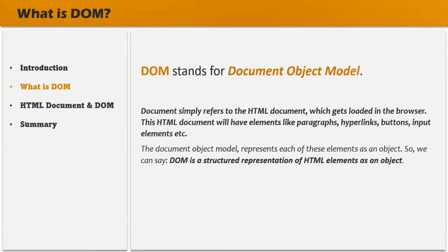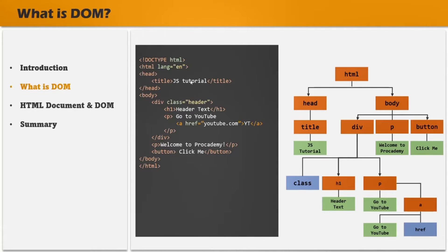Let's understand this with an example. Here I have a very simple HTML. In this HTML, we have a head tag, inside that we have title, we have body tag, inside that we have div and paragraph element and button element. When this HTML document is loaded in the browser, for each element of this HTML document, an object will be created in the DOM. For example, for this HTML element, an object called HTML will be created. In this HTML, we have this head tag and the body tag. So an object for head and body will be created in the DOM.